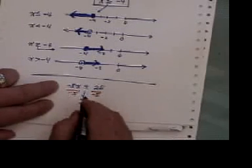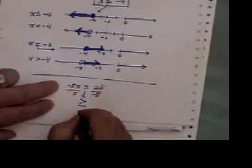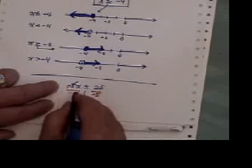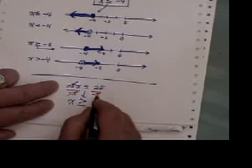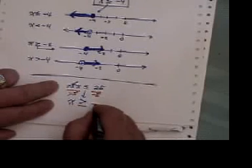So instead of saying less than or equal to, you now say greater than or equal to. Negative five cancels negative five, 25 divided by negative five is negative five.